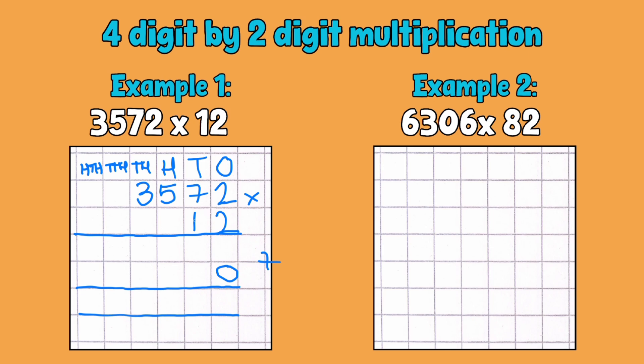We're going to first try and multiply 3572 by 2 and put that on this line. So we're going to partition 12 into 10 and 2. 2 multiplied by 2 is 4. 2 sevens are 14 — unit down, carry the 10. 2 fives are 10, add the 1 is 11. And 2 threes are 6, add the 1 is 7. So 3572 times 2 is 7,144. We can strike that one through and forget about it for now.